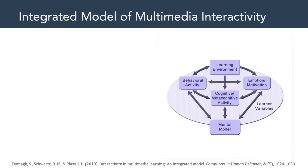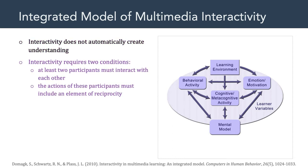With that background model, we read about the integrated model of multimedia interactivity, which was proposed by Domak and colleagues. This is a very theoretical model, and as much as I like it — and I think it is a very good theoretical model — as some of you pointed out in your reflections, you felt it was a little complex. According to these authors, interactivity does not automatically create understanding. So interactivity can be good, but it's not necessarily automatically a good thing when it comes to learning. We learned that interactivity requires two conditions: there has to be at least two participants interacting, and one of the participants is the learner, and the other is the learning environment — the multimedia system.